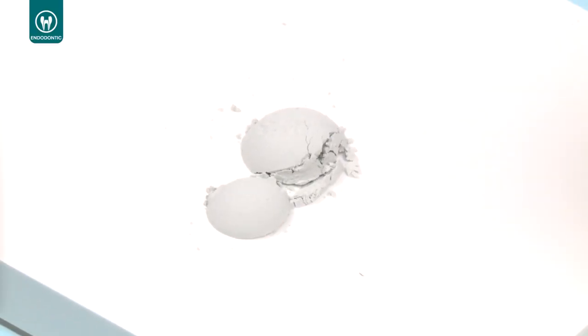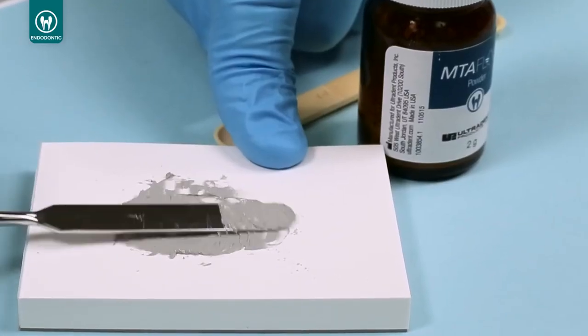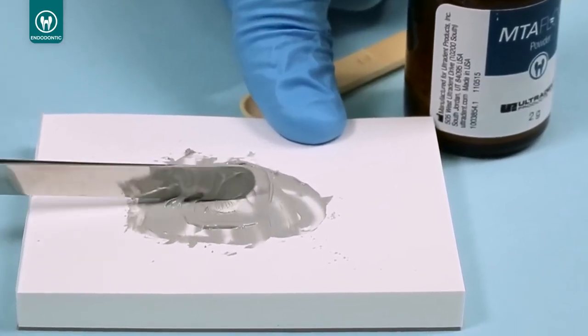The EndoEase MTA Flow Ultrafine Powder and Proprietary Gel Medium creates a smooth consistency which stays in place and helps prevent washout.